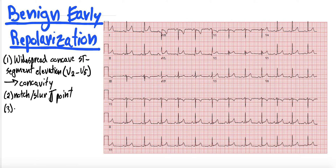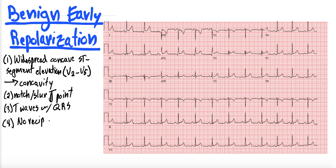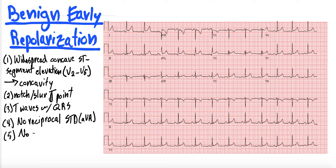You want your T waves concordant with your QRS. No reciprocal ST depressions — that would be more concerning for ischemia. No reciprocal ST depressions other than AVR, which given its location is always reciprocal. And then you don't want any dynamic changes over time. When you get a repeat EKG in 15 minutes, it should not be an evolving thing — it should be stagnant and stable, so no dynamic changes.